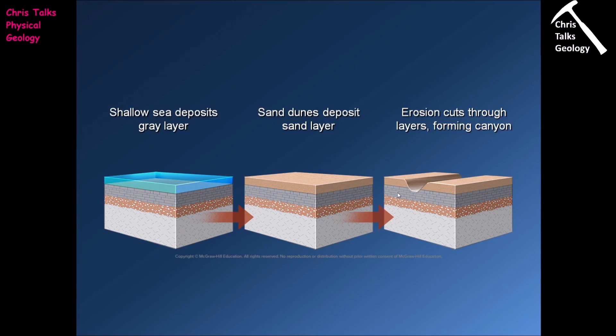So we can see the grey layer deposited in a shallow sea, the sandstone deposited over the top, and erosion sculpting the surface to produce the valley. These are the things geologists are looking for — constantly thinking about what's happening on the surface of the earth, why it's happening, and then using measurements and data from outcrops to predict what's happening in the subsurface. Thank you for watching, and have a good day.